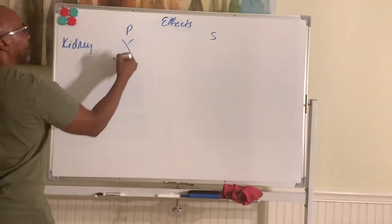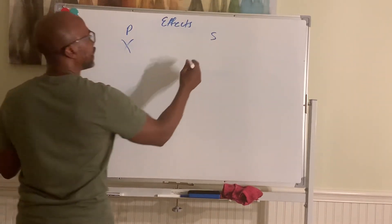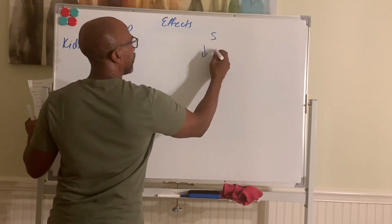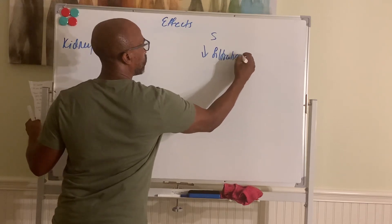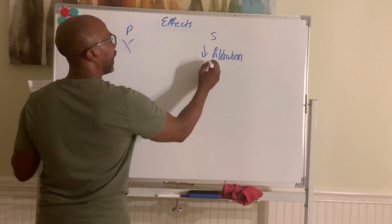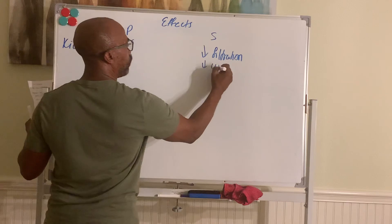Your kidneys. Para does not affect kidneys. And simpa will decrease filtration. Decrease the amount of blood entering into the kidneys for filtration. And will also decrease urine production.